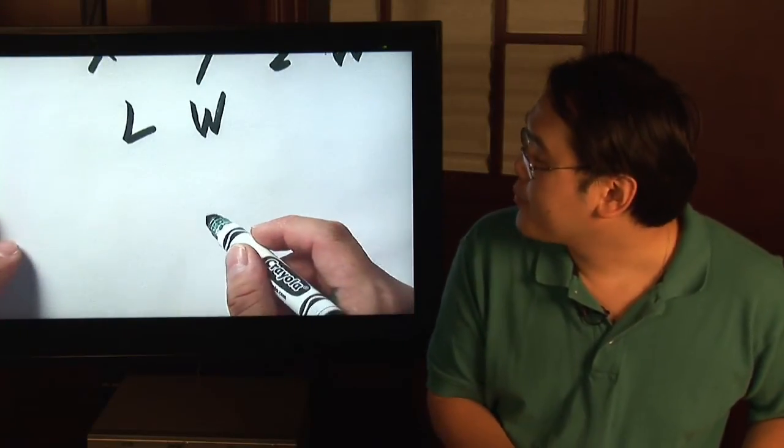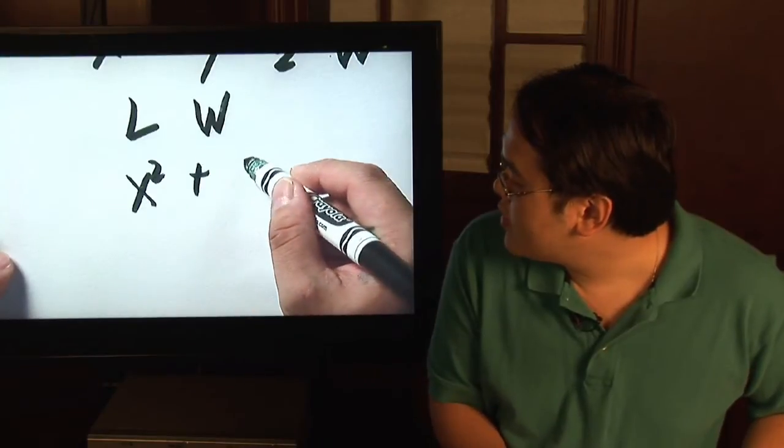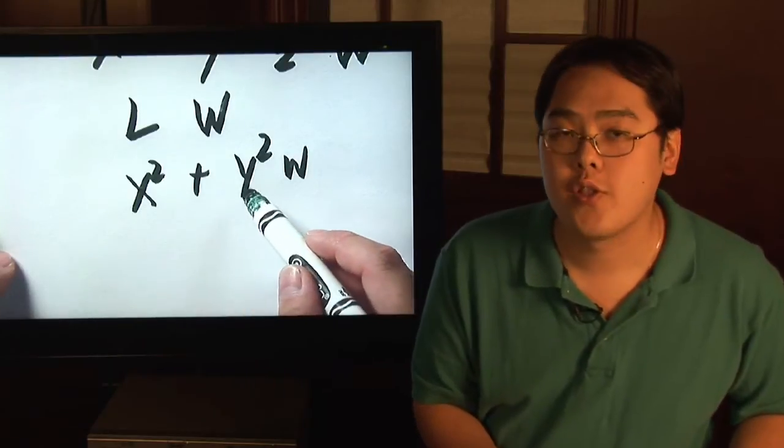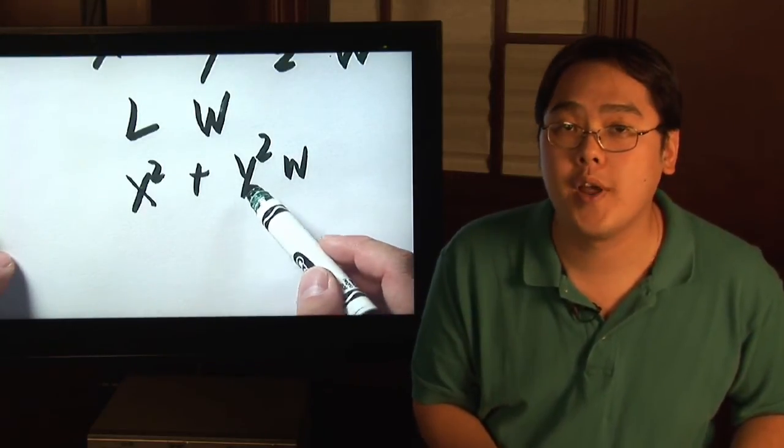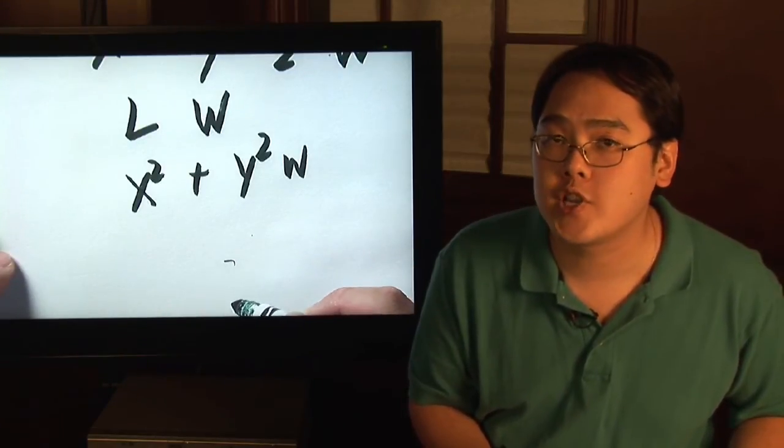If you see something like x + y²w, there are actually just three unknowns: x, y, and w. The variables are raised to powers and separated by operations.